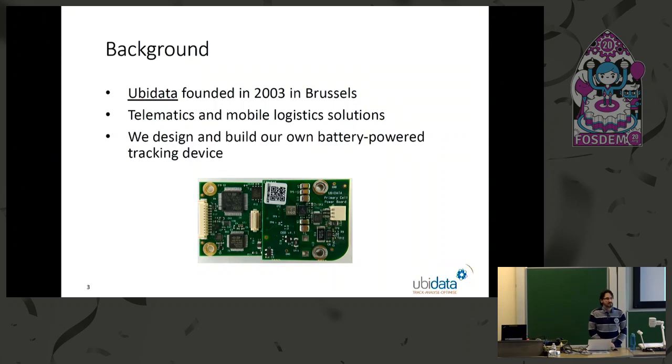So Guillaume Vierre, it's a Belgian company founded in 2003. We're located in Brussels and we specialize in telematics and mobile logistics solutions. And as part of this, we build our own tracking device. So it's a battery-powered tracking device. And here you've got a picture of the latest generation.